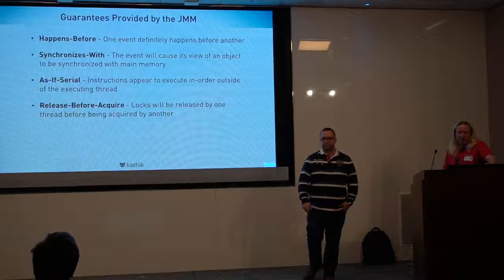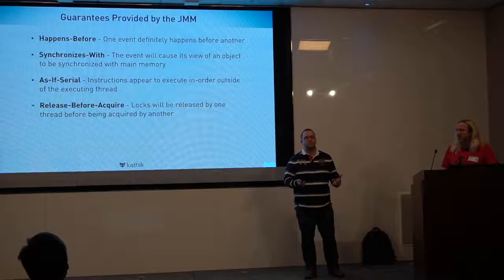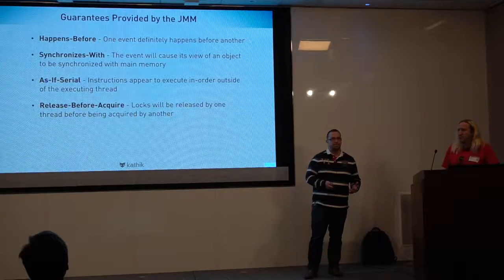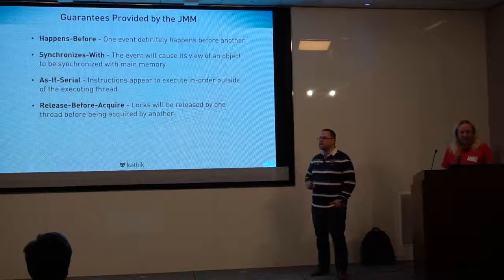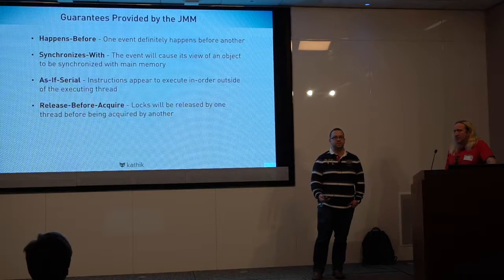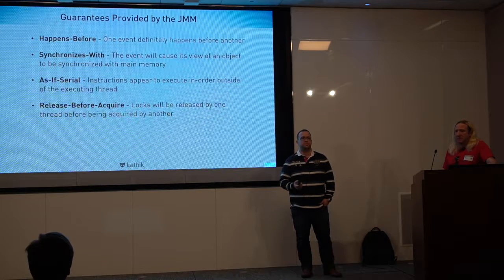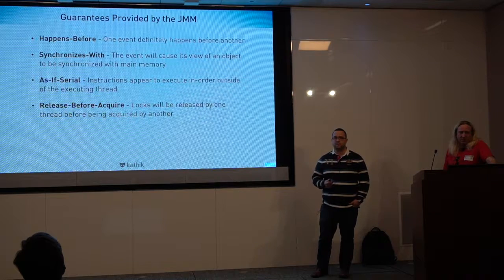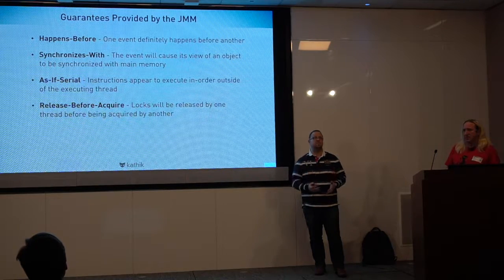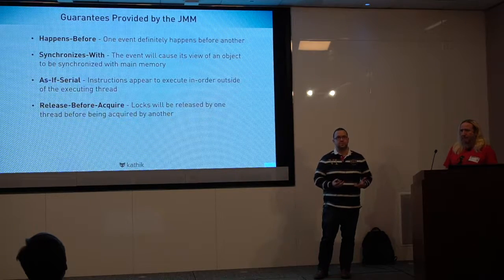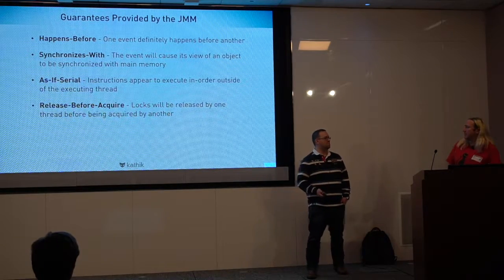The Java memory model has been around since version one, had a significant update for Java 5, and Java 9 introduces a new evolution. It provides guarantees including a happens-before relationship — one event definitely happens before another is allowed to proceed. Synchronized ensures an event, once complete, goes back into main memory to prevent lost updates. Within a synchronized block, regardless of CPU reordering, operations will appear to have happened in a serial fashion. And locks will be released before being acquired by another thread.